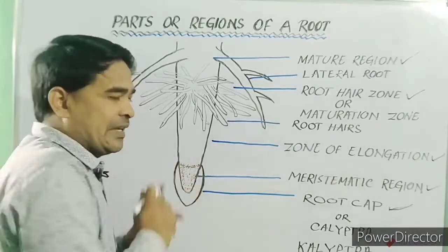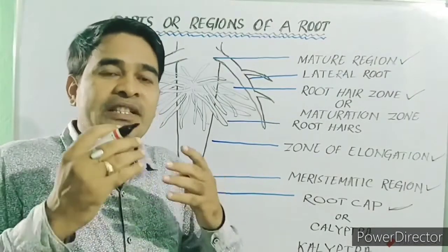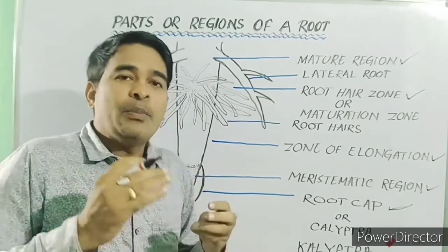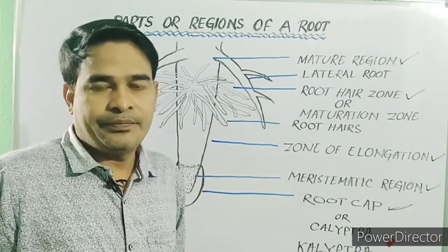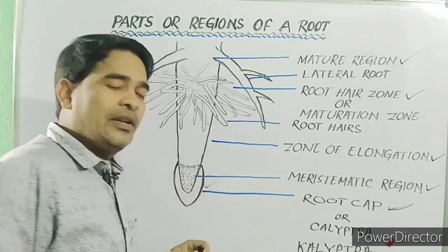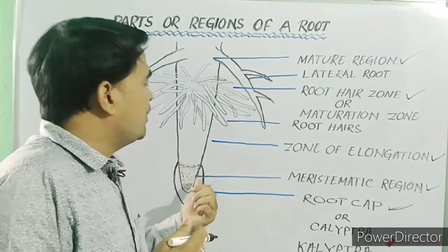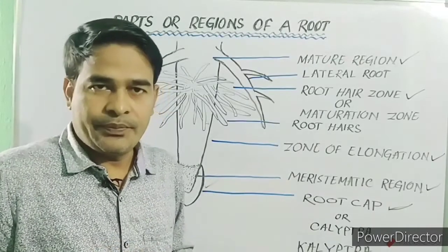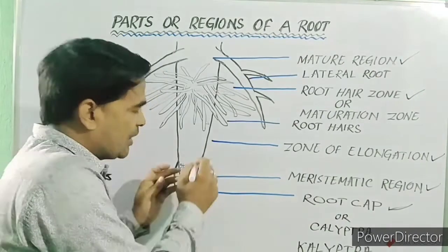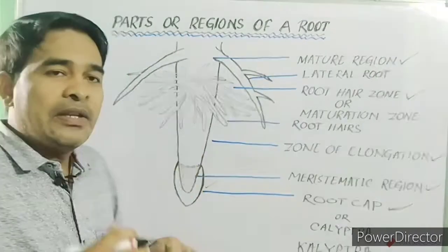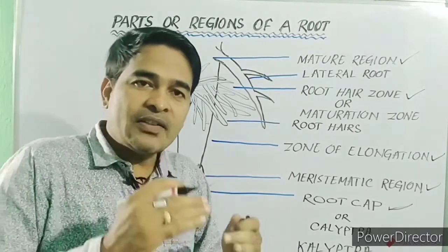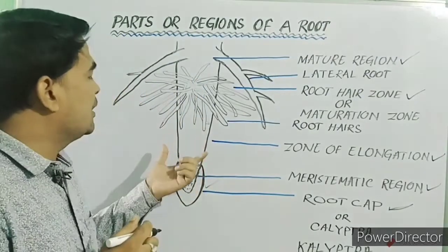And this root cap is a cushion-like multicellular structure formed of thin-walled parenchymatous cells. The function of this root cap is protection of the growing tip or meristematic region of the root. Besides, this root cap or the cells of the root cap secrete a mucilaginous substance which lubricates the soil through which the root is to grow.